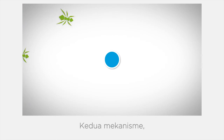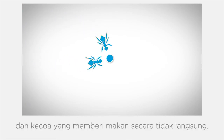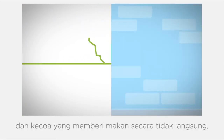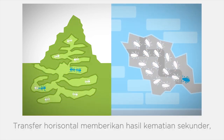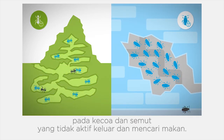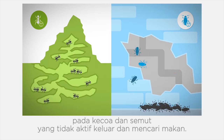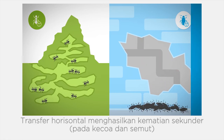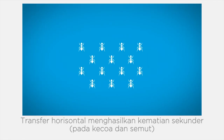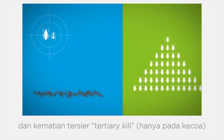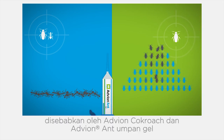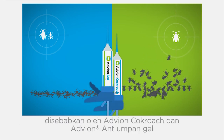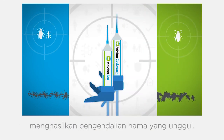Both mechanisms — the active feeding of the ants and the indirect feeding in the cockroach harbourage — are known as horizontal transfer, resulting in secondary kill of the cockroaches and ants who do not typically go out and forage. The horizontal transfer resulting in secondary and tertiary kill caused by Adveon ant and cockroach gel baits results in superior pest control.